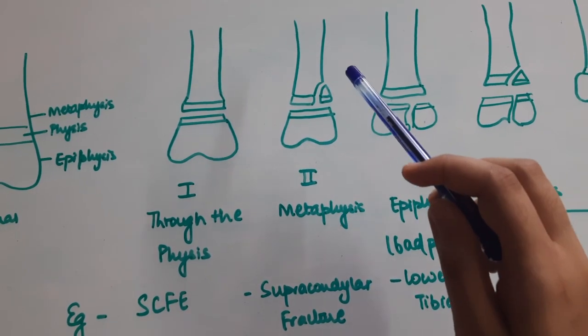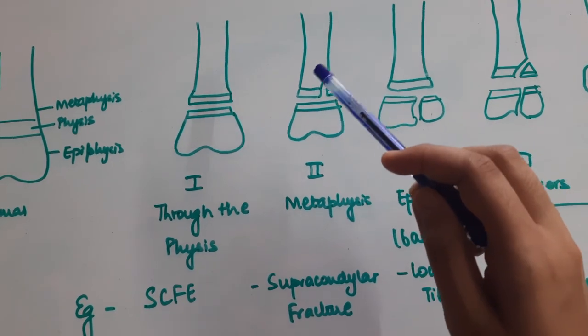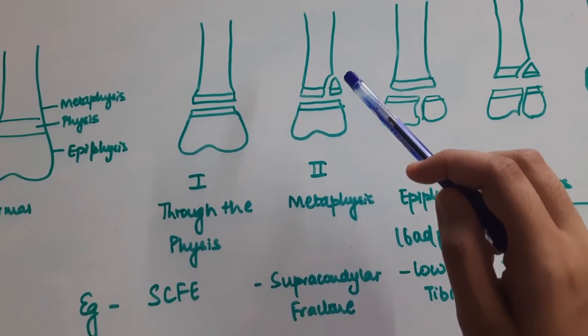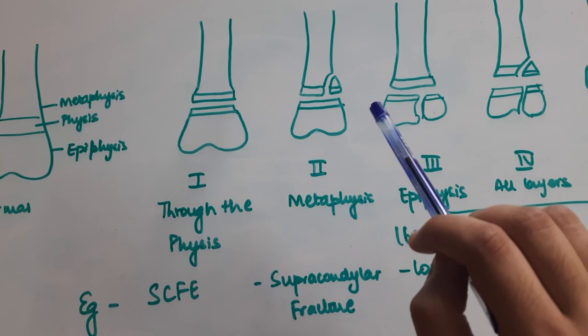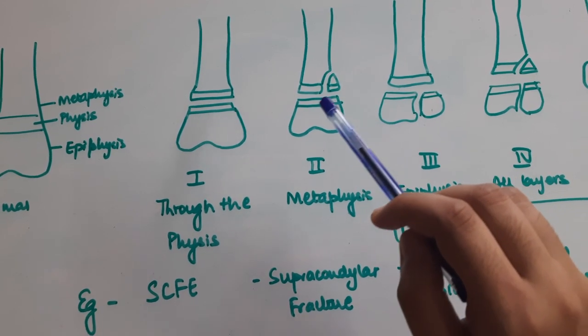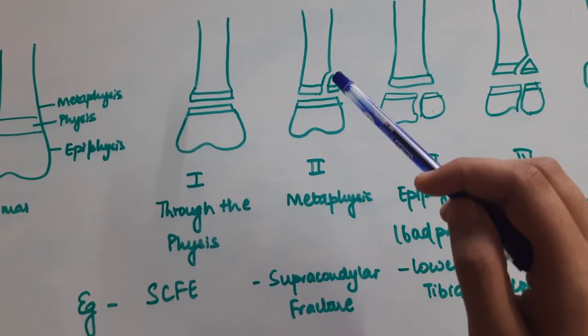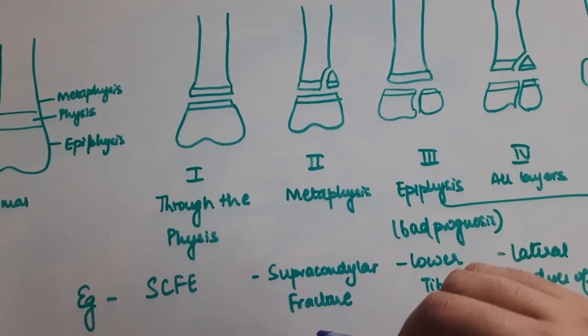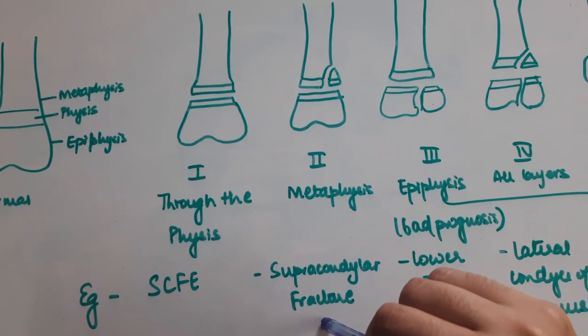The second type is when the fracture is in the metaphysis. This has a better prognosis because it does not directly involve the growing growth plate. An example of this would be supracondylar fracture.